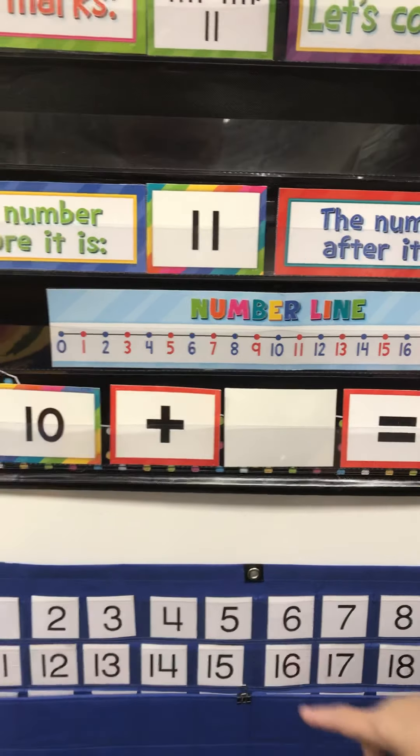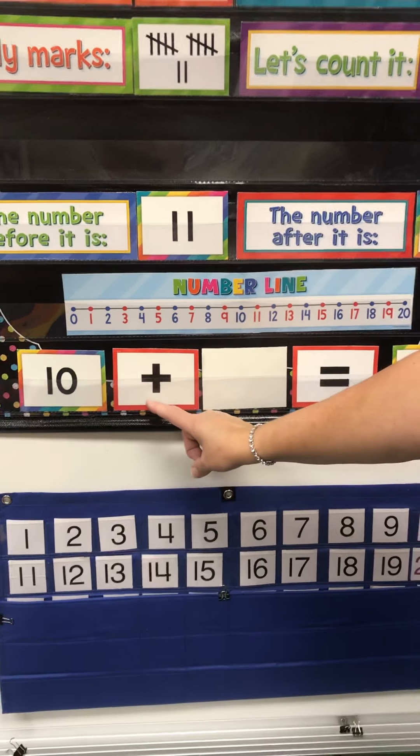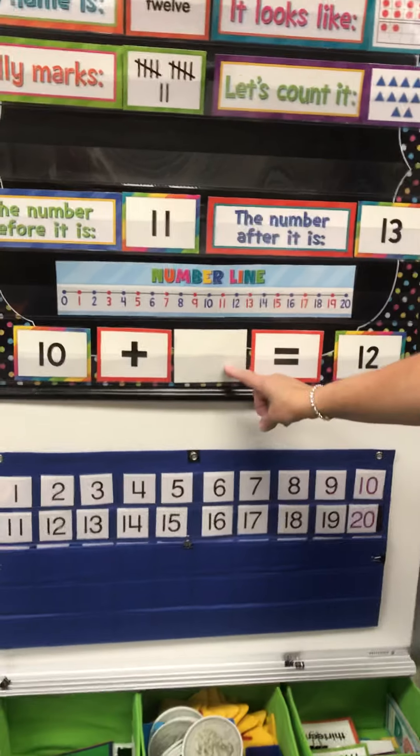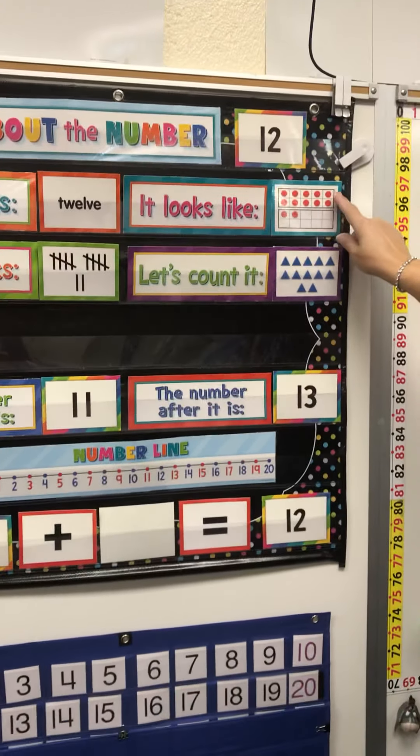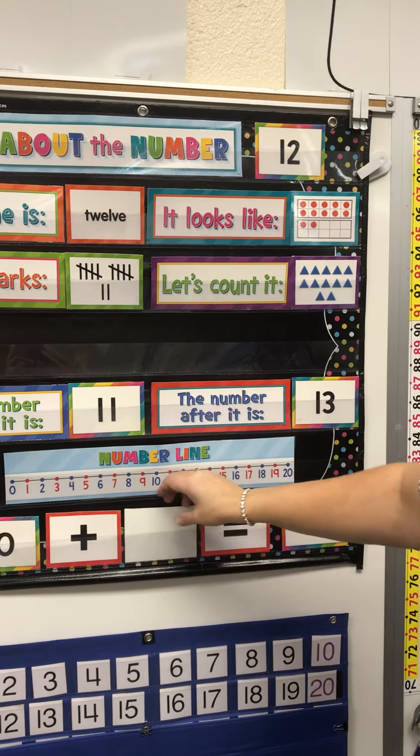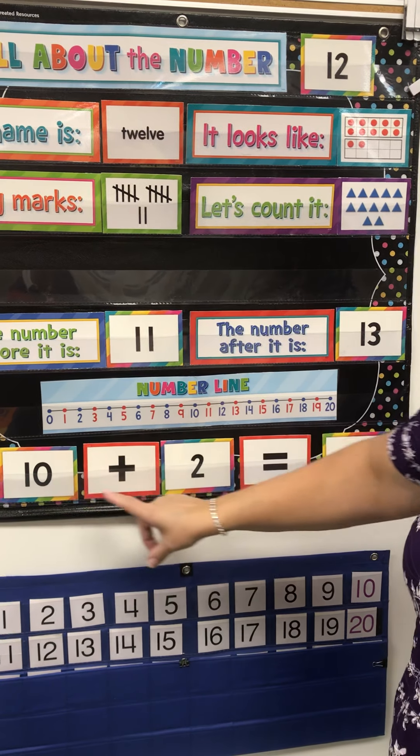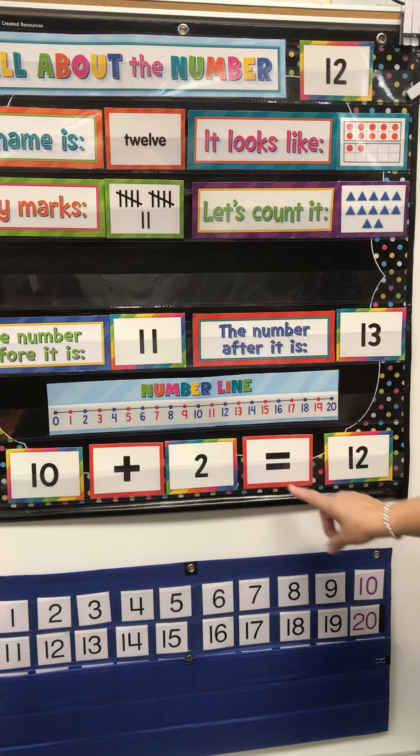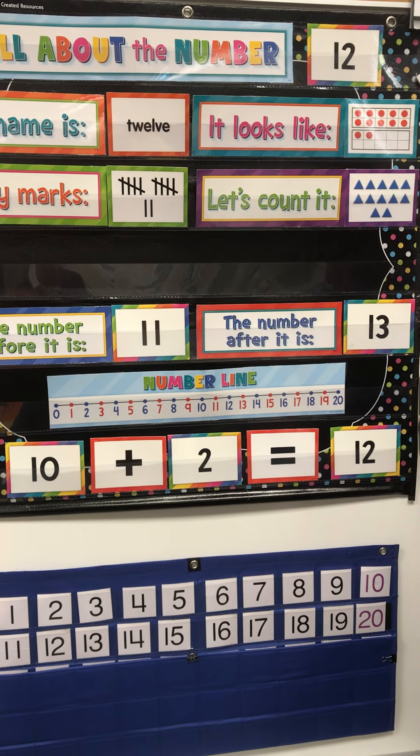Now let's look at how we can make 12. We have a 10 plus how many more will equal 12? Well, look up here. Here's our 10. And how many more do we need to get to 12? We need 2 more. 10 plus 2 equals 12.